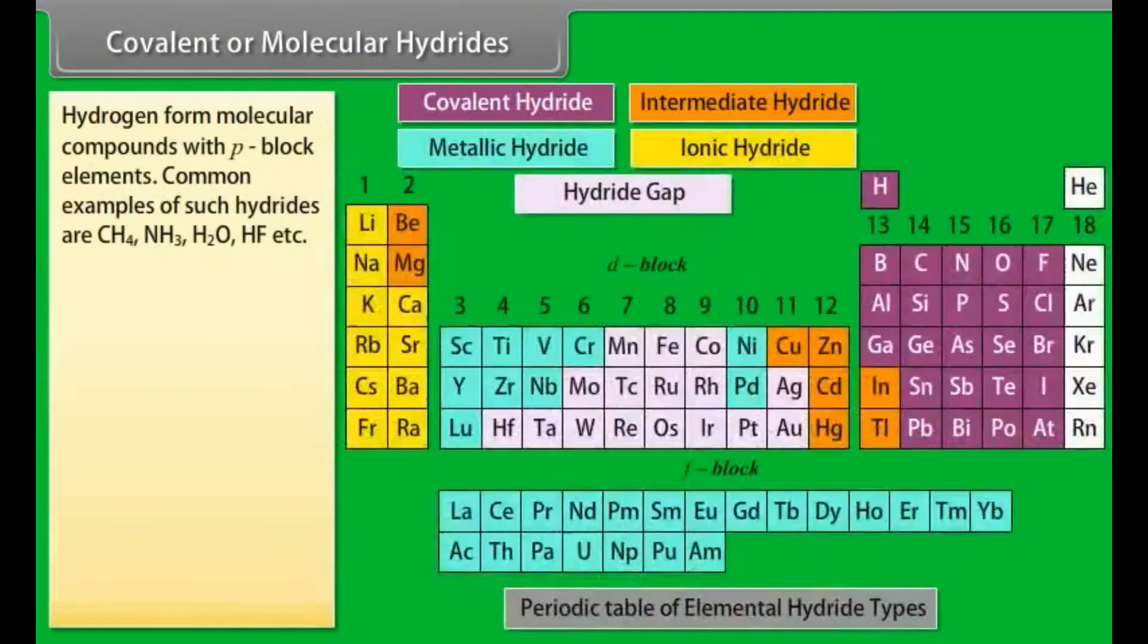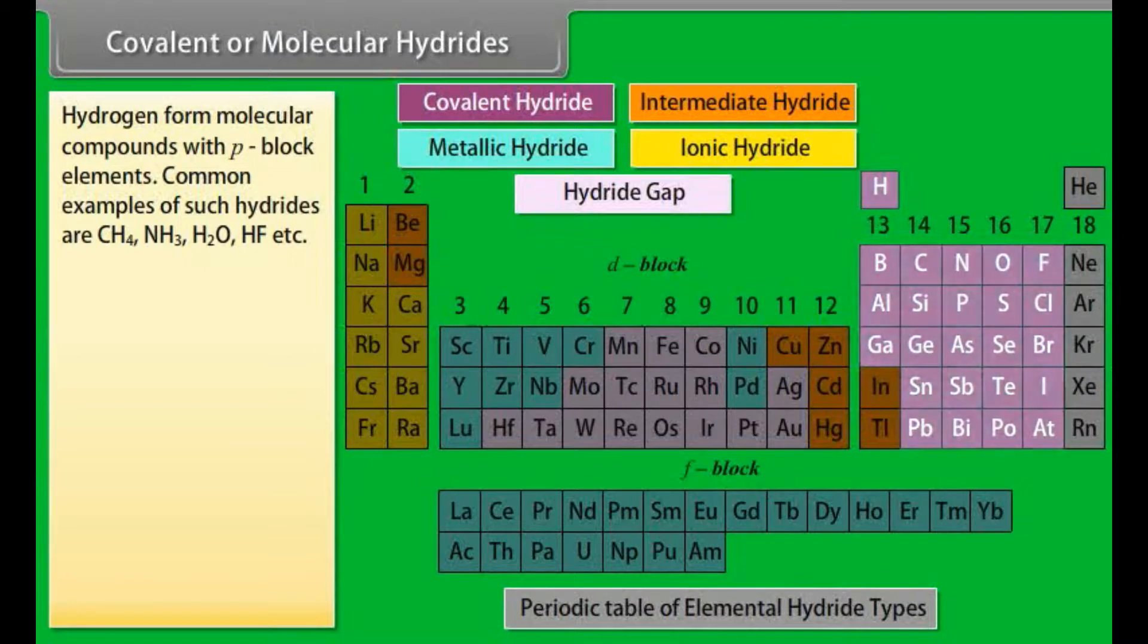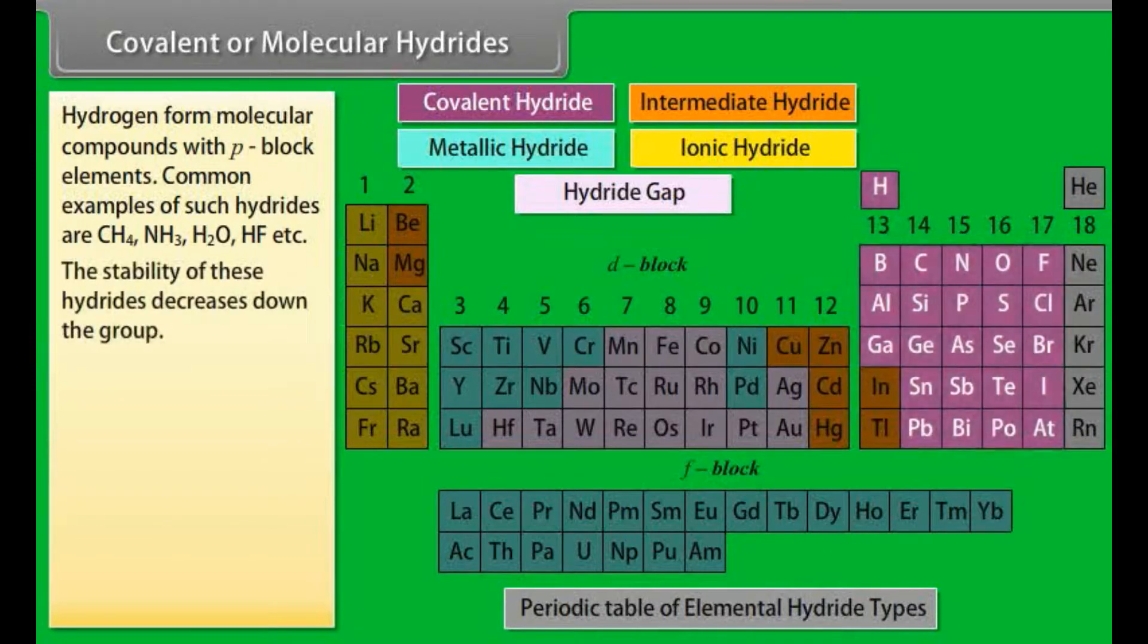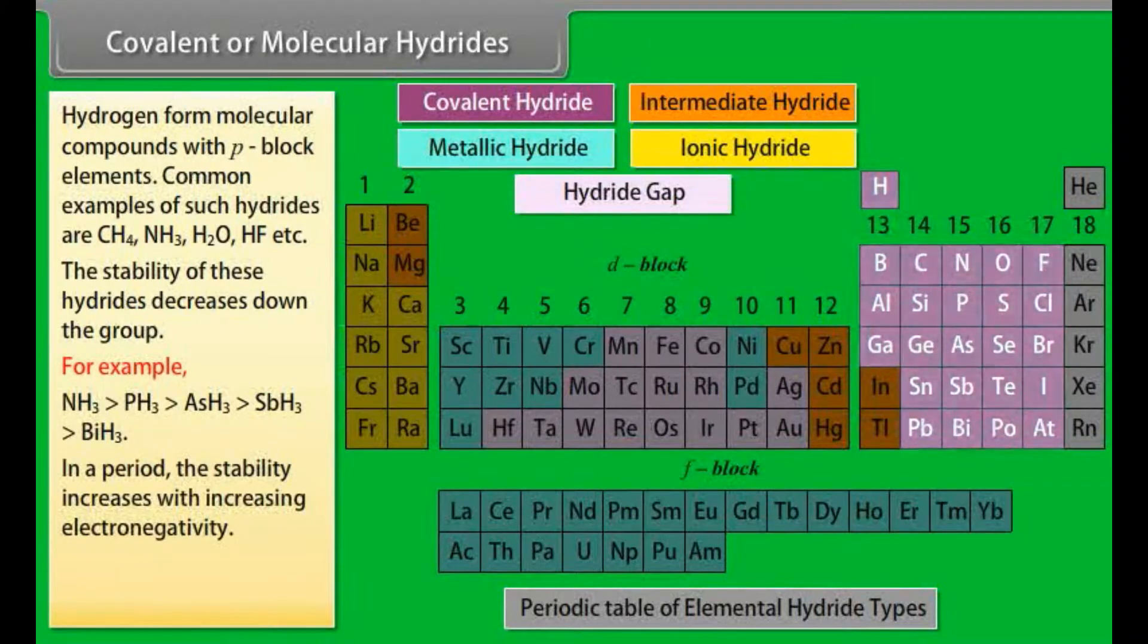Covalent or molecular hydrides. Hydrogen form molecular compounds with P-block elements. Common examples of such hydrides are CH4, NH3, H2O, HF, etc. The stability of these hydrides decreases down the group. For example, in a period, the stability increases with increasing electronegativity.